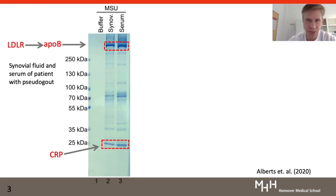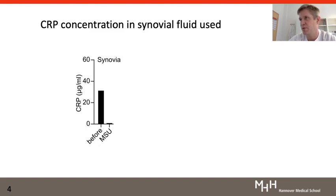The binding of CRP to cholesterol crystals had been shown before, so we were unsure whether we want to follow up this finding. However, when we looked at the CRP concentration within this synovial fluid that we used, we found that before the experiment there were 30 micrograms per ml in it and after the experiment, surprisingly, the CRP was principally gone, indicating that CRP binds to the crystals so strongly that it can actually be depleted from human body fluids.